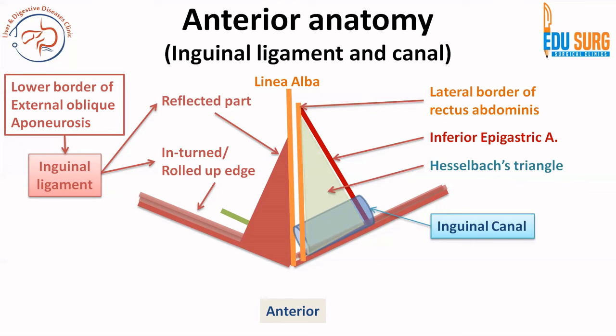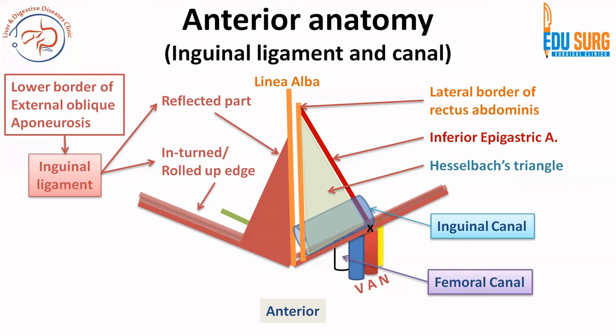The triangle formed between the inferior epigastric artery, the inguinal ligament, and the lateral border of the rectus abdominis is the Hesselbach's triangle, which is the area for direct hernias. As we already saw, the infra-inguinal area takes care of the femoral sheath with its structures and the femoral canal.